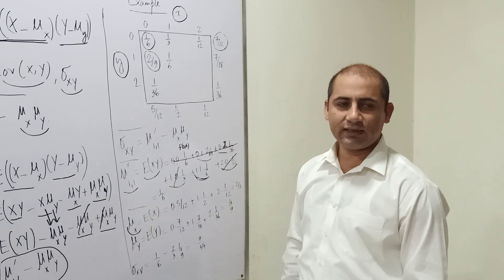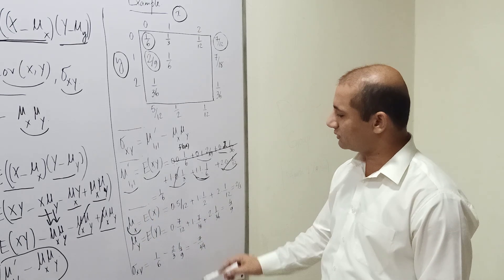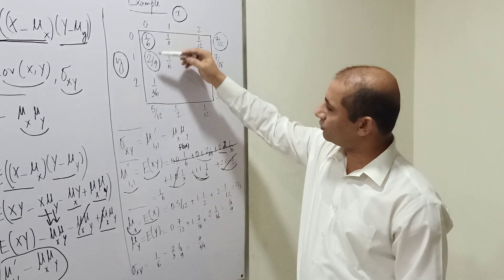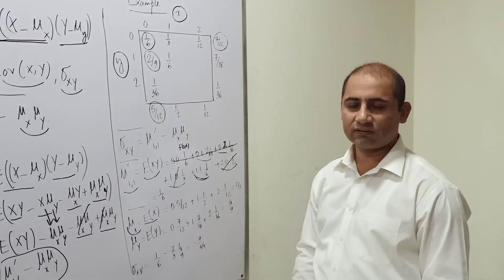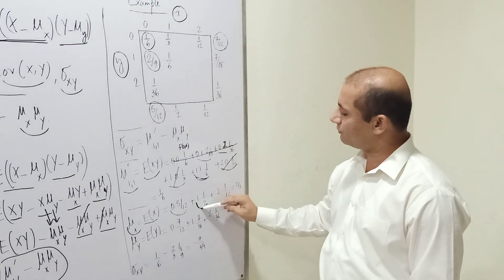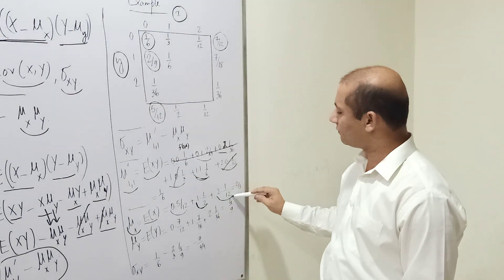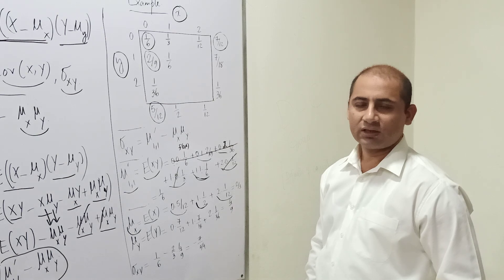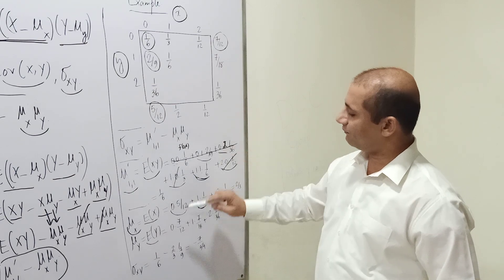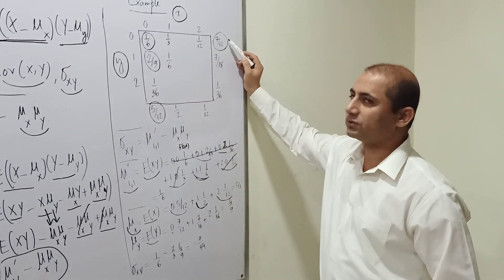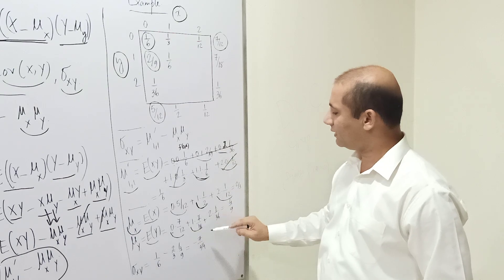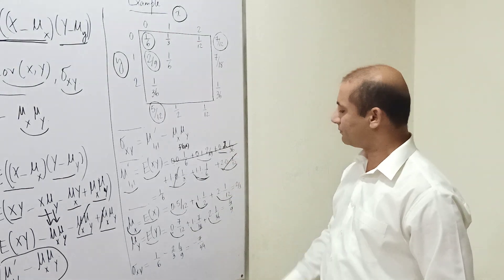Now we compute mu_x = E[X]. Using the marginal distribution: 0*(5/12) + 1*(1/2) + 2*(1/12) = 2/3. For mu_y = E[Y], using the marginal distribution: 0*(7/12) + 1*(7/18) + 2*(1/36) = 4/9.